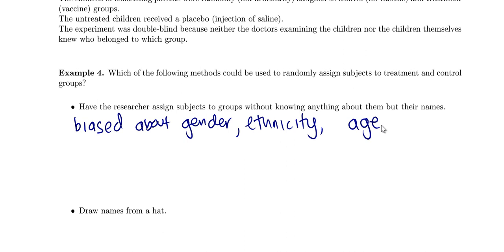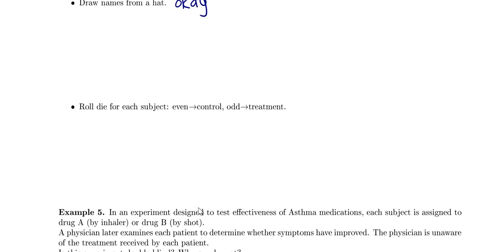The next method: draw names from a hat. That would actually be okay — you shouldn't get too much bias just drawing names from a hat. And the next: roll a die for each subject; even numbers go to the control group and odd numbers go to the treatment group. This would also be an okay method because it has nothing to do with the actual person, so there shouldn't be any bias.